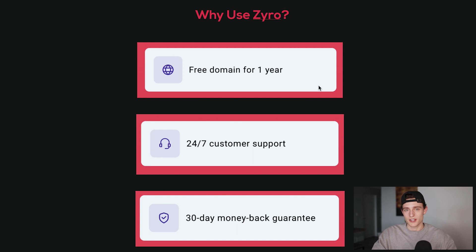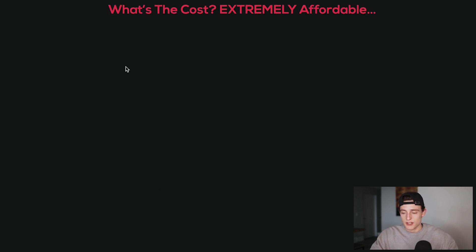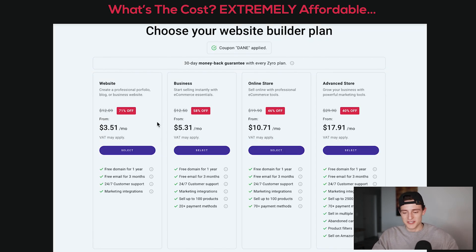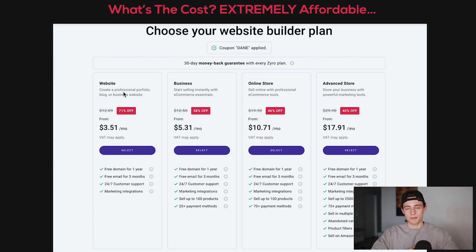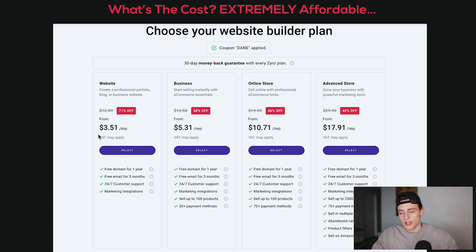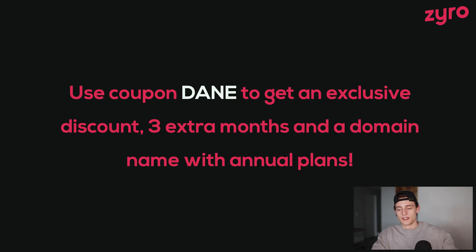It's high-quality support right there whenever you need it, and if you're not happy with your first 30 days you can get your money back. In terms of costs, it's extremely affordable — you can literally start for $3.50 per month. As you go up in plans you get a bit more. The link in the description has my coupon code 'Dane' automatically applied at checkout, giving you a discount. Every plan includes the free domain, so click that link to follow along.